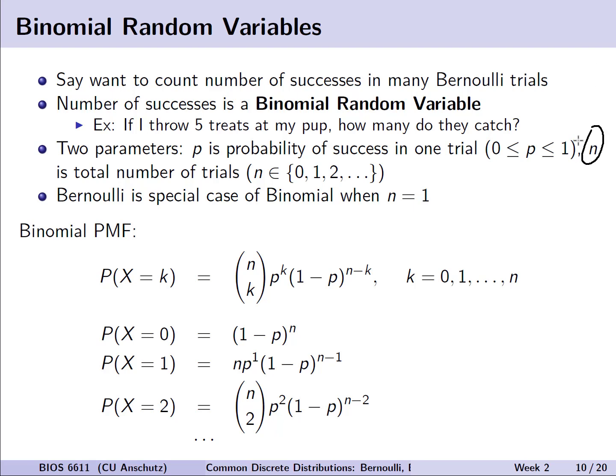The other thing we now have to consider is this value n, and that's the total number of trials we're conducting, where n is going to be some integer value: 0, 1, 2, and up. The Bernoulli distribution is a special case of the binomial when n is equal to 1.